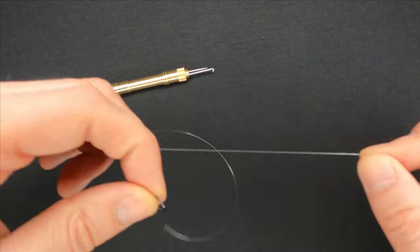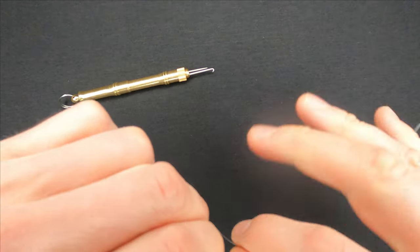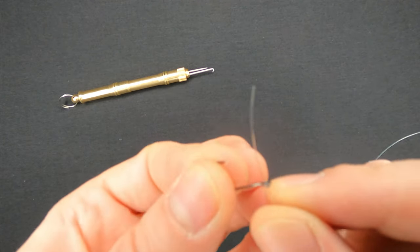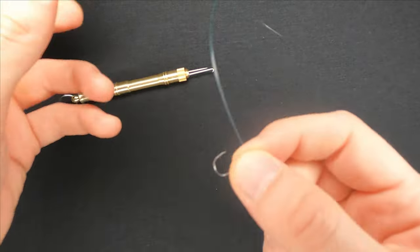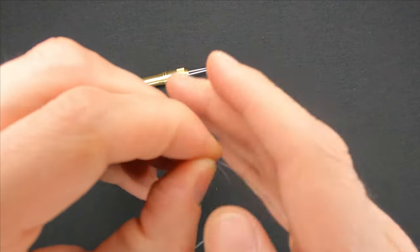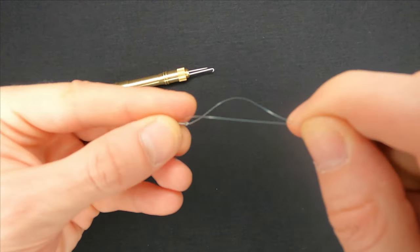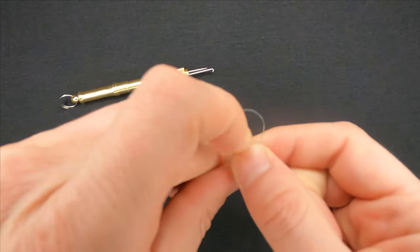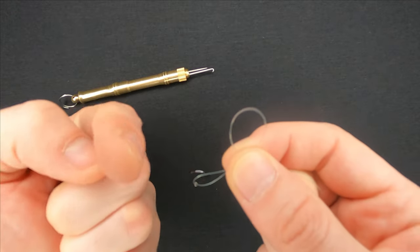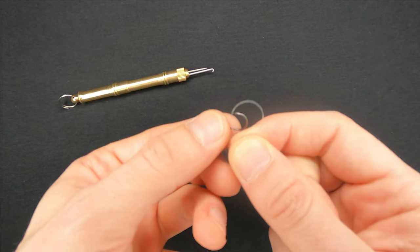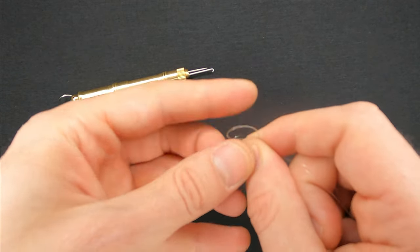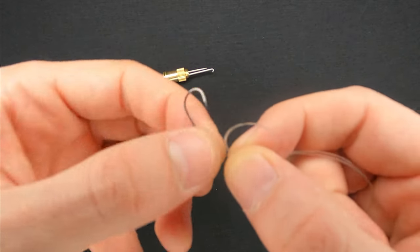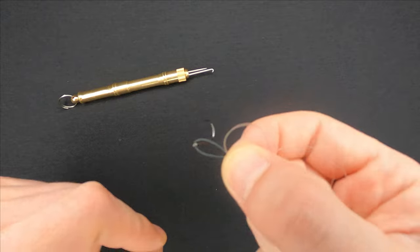To tie a hook, take the line and put the tag end through the hole of the hook and make a double line like this. Wrap the double line around your index finger and put the single line loop with the hook through the double line loop from the bottom to the top, and hold the intersection of two loops with your fingers.